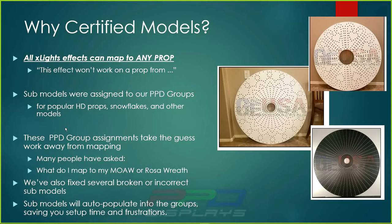The submodels were assigned to PPD groups for popular HD props such as the Rosary, the Candy Cane Spinner, and the Grand Illusion. We took the PPD groups and assignments to remove the guesswork from mapping. Adding our PPD groups to these models means they'll automatically populate when you import them into your layout. There are just a couple of buttons to click — you just click OK a number of times and it auto-populates into your layout. It's very, very simple.